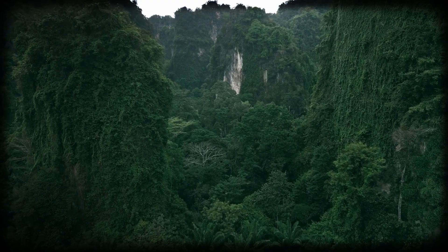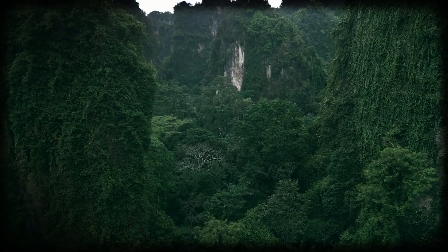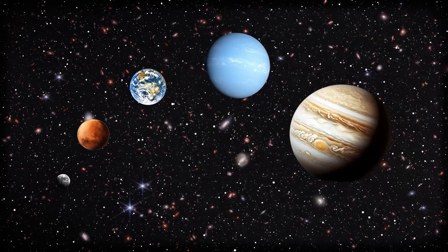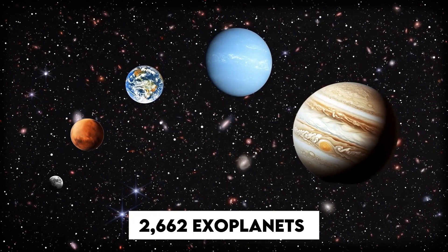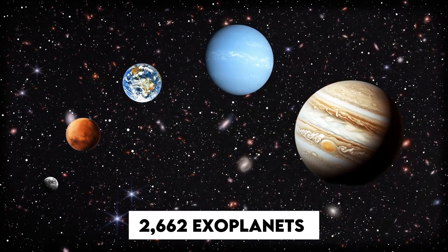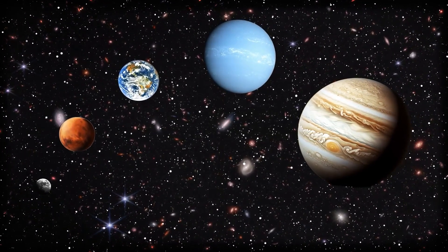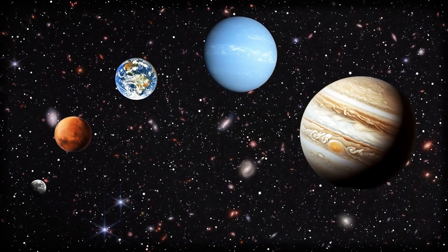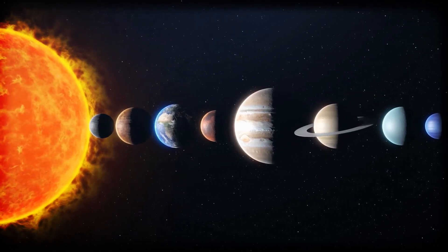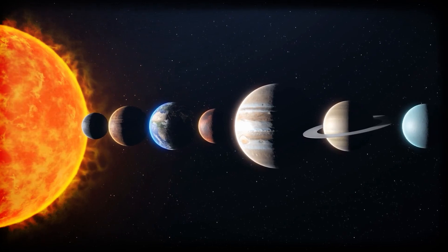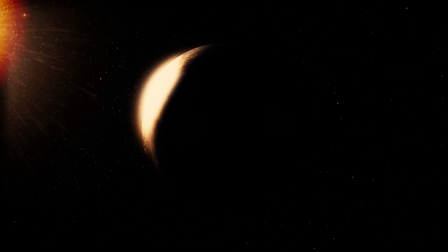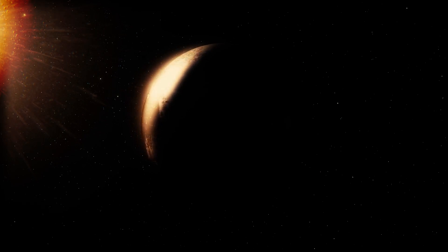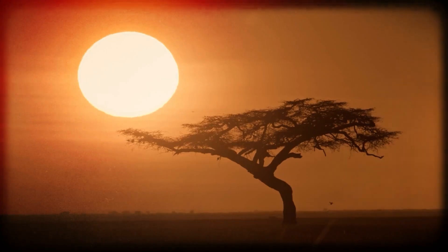But hold on, before we get too carried away dreaming of alien oceans and lush forests, here's the reality check. Out of 2,662 exoplanets discovered by Kepler, only 16 are actually located in this habitable zone. And even among those, a lot of them come with major complications. Some of these planets are tidally locked, meaning one side always faces their star while the other is stuck in permanent darkness. That creates wild temperature extremes and makes it harder for life as we know it to survive.